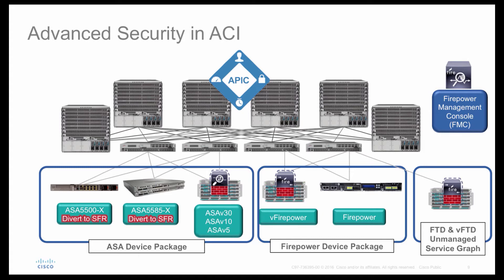Everything is controlled by the APIC controller — you register devices on APIC and it stitches them into the data plane. However, for FTD there is currently no device package available, so it must be configured as an unmanaged device. This means all configuration — interface settings, threat policies, failover — must be done in advance on FTD. APIC can only notify leaves to redirect traffic to FTD; all FTD configuration is managed directly via CLI or Firepower Management Center.